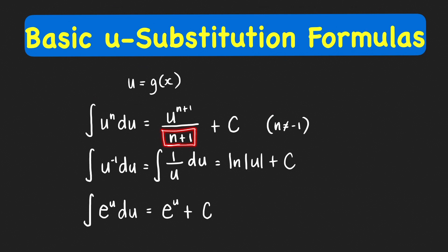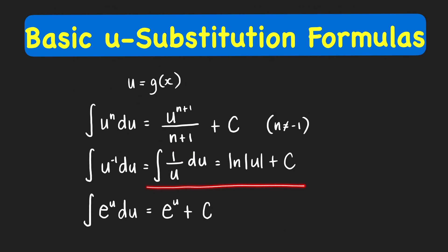Now, what should we do when n is equal to negative 1? When n equals negative 1, this is just the integral of 1 over u du. We have this rule, which is called the natural logarithm rule: the integral of 1 over u du is equal to ln of the absolute value of u plus c.